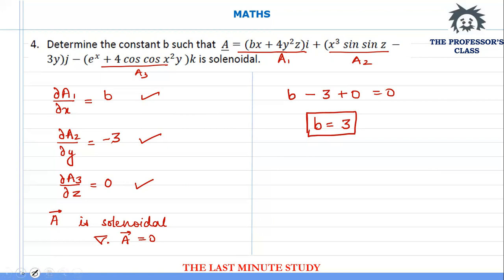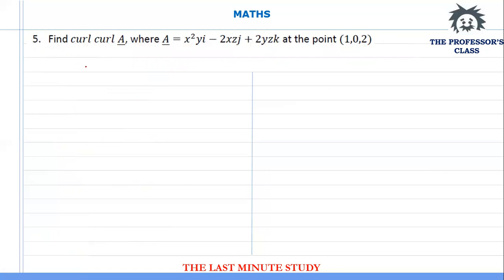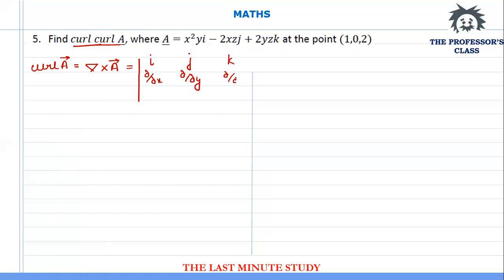Now let's complete the last question of the tutorial — question number 5. Here I need to calculate the curl of curl of A, where the vector A is given as x²y·i - 2xz·j + 2yz·k, at a given point. The curl of A is the cross product of the del operator with the vector A, expressed as the determinant with i, j, k in the first row.